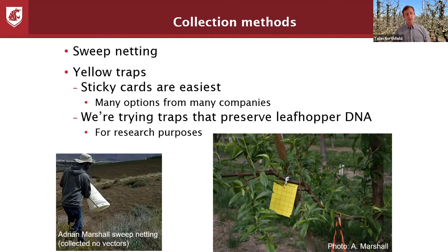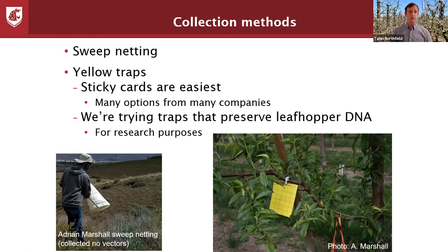All it has to be is yellow and sticky. There are many options from different companies — some fold in on themselves, some are one-sided, some are double-sided. As long as it's yellow and sticky, it should work. We're also going to be trying some traps that preserve leafhopper DNA, but that would really be more for research purposes at this point.